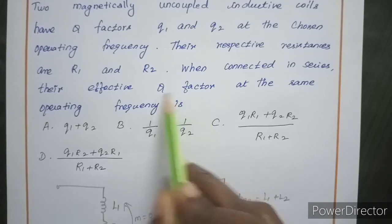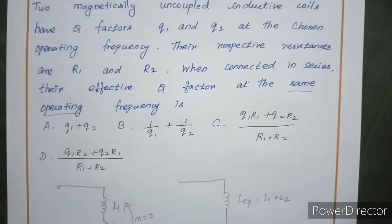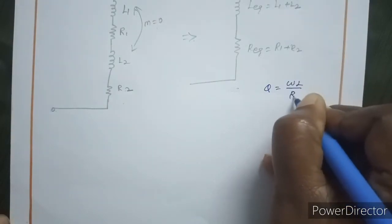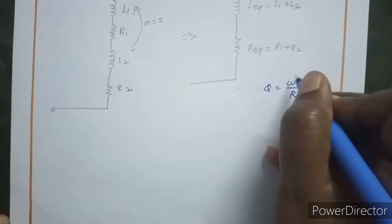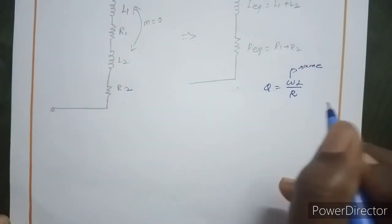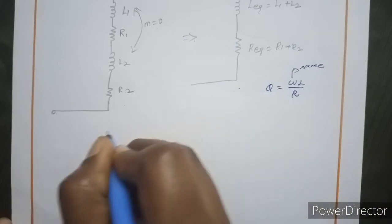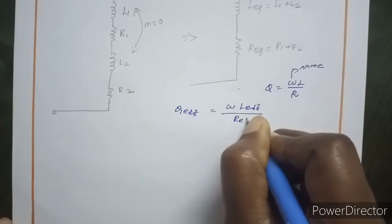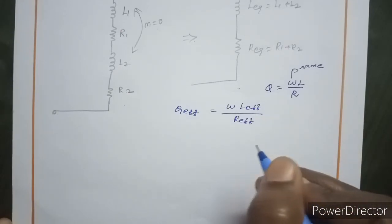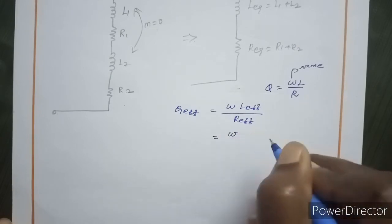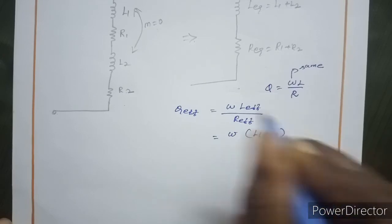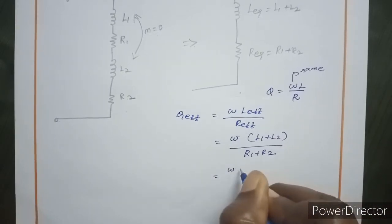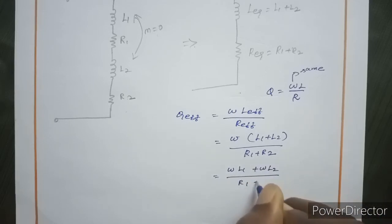The Q factor at the same operating frequency: the general Q factor formula is Q equals omega L by R. Since omega is the same operating frequency for both coils, the effective Q factor equals omega times L effective divided by R effective, which is omega times (L1 plus L2) divided by (R1 plus R2).